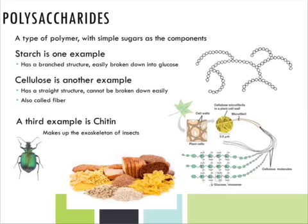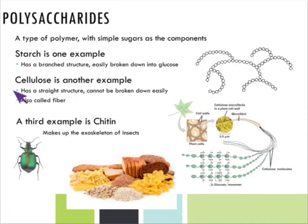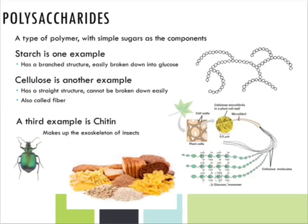One example of a polysaccharide is starch. Starch has a very branched structure and is found in things like rice, potatoes, and pasta. It's easily broken down by living things into glucose, which is energy for cells. Another example of a polysaccharide is cellulose, which has a straight structure rather than a branched one. Because of its structure, cellulose is very difficult to break down — humans cannot break it down at all, though some animals can. We call it dietary fiber, found in whole grain breads and vegetables.